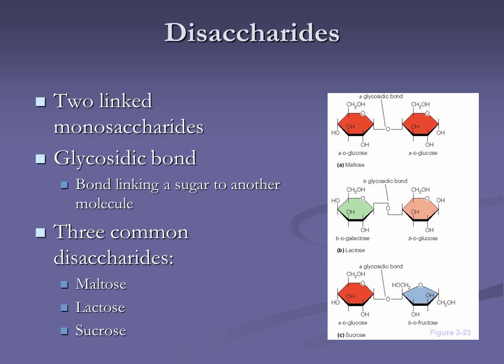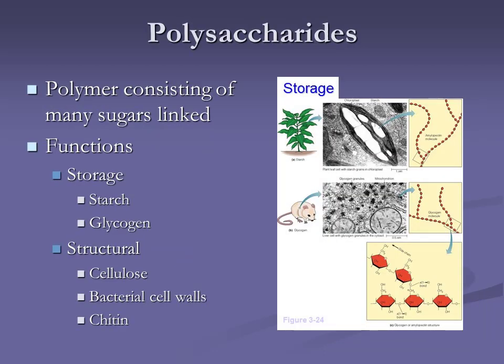Our polysaccharides: starch in plants, glycogen for animals, structural polysaccharide cellulose, chitin in insects. Bacterial cell walls also have a polysaccharide composed of glucose carbohydrates that support the bacteria.